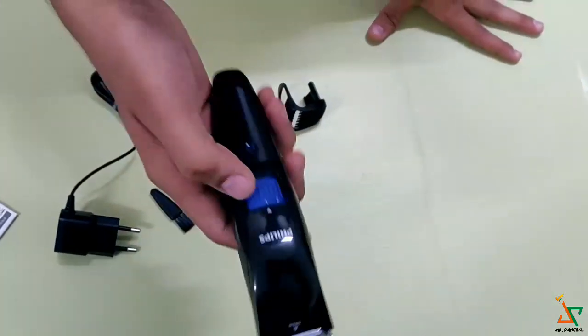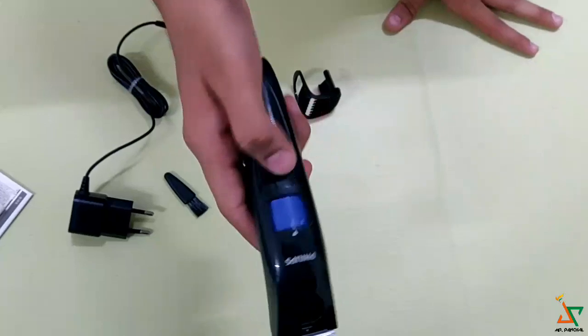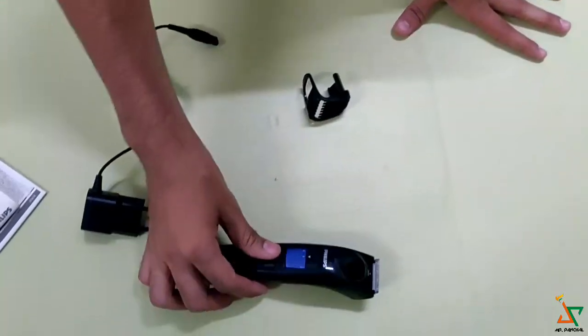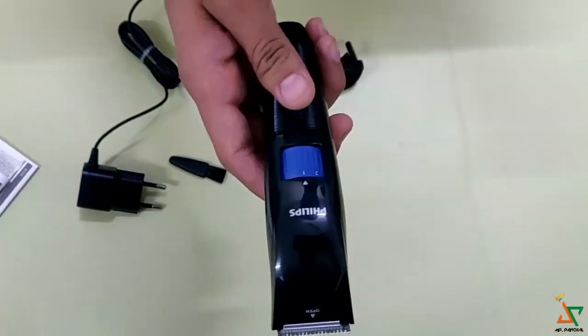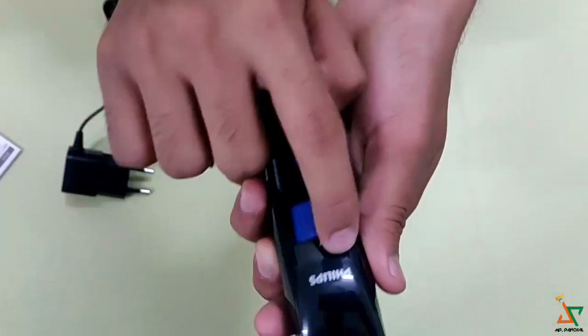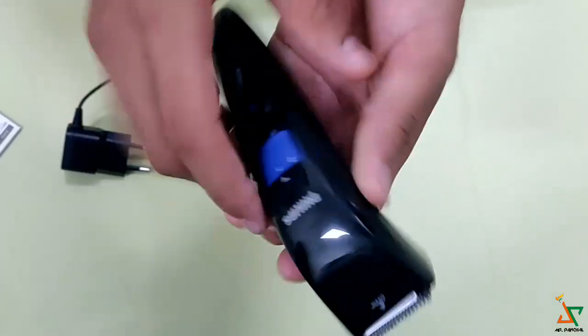So friends, this is the trimmer. The trimmer is very good. You should buy this trimmer. And the price of this trimmer, it costs 1400 rupees. From Jammu. Then there is one small Philips logo there.